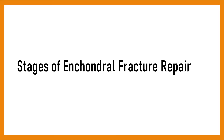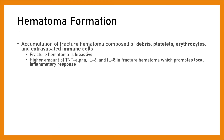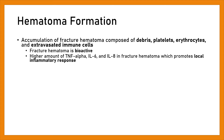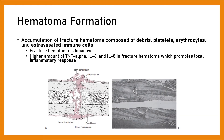Stages of endochondral fracture repair. Hematoma formation: Accumulation of fracture hematoma composed of debris, platelets, erythrocytes, and extravasated immune cells. The fracture hematoma is bioactive, with higher amounts of TNF-alpha, IL-6, and IL-8, which promote a local inflammatory response.